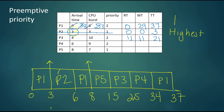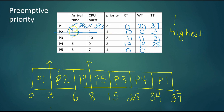P4 arrived at time six and eventually got the CPU 19 time units later at time 25. P4 finished at time 34, giving a turnaround time of 28. P4 spent 19 time units waiting and nine time units on the CPU. P5 arrived at time eight, never waited — as a priority-one process in a preemptive priority system — and spent its full seven time units on the CPU. In the next video we will practice multi-level queue and multi-level feedback queue scheduling.